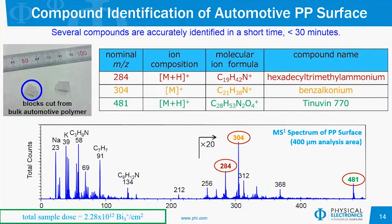In a matter of 30 minutes — that is acquisition time and reference library matching — we have identified all three peaks of interest on our sample surface. For those who are used to doing TOF-SIMS analysis in a business environment where time is money, typically if you have an unknown peak you need to get reference compounds for everything that could be in the sample, spending significant time just collecting reference samples and then making samples for analysis. It's not inconceivable that you can spend days or even a couple of weeks just trying to identify a few peaks. Here in 30 minutes, we've identified with absolute certainty three peaks of interest on this sample — a big time saver.